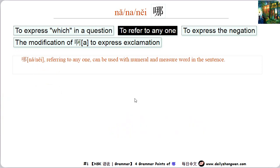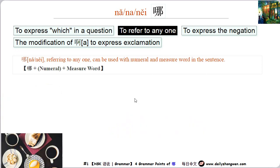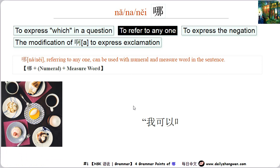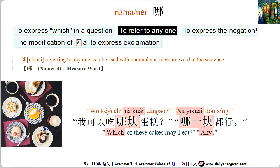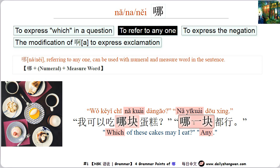哪 can also refer to 'any'. For example: 我可以吃哪块蛋糕？哪一块都行。In the question, 哪块 means 'which'. In the answer, 哪一块 refers to 'any'. 哪一块都行 means 'you can eat any one of them'.